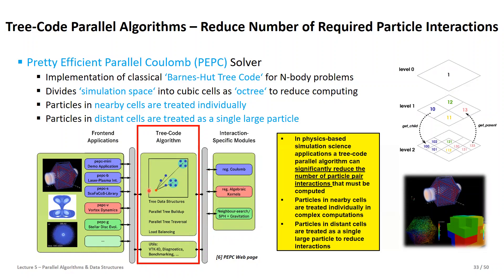We'll come back to this in adaptive mesh refinement, CFD codes, and FEM as well. Here we have different levels of the tree, allowing us to traverse it much more quickly than a Cartesian grid, because it's optimized to the interactions of interest — where the physics takes place. By summarizing interactions at tree levels, we significantly reduce the number of particle pair interactions. Computer science trees operate on logarithmic scales instead of n² or n³ complexity ratios.